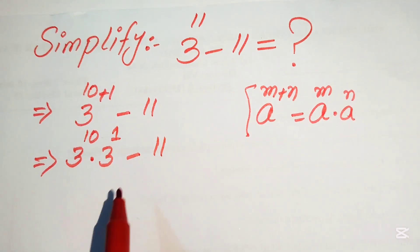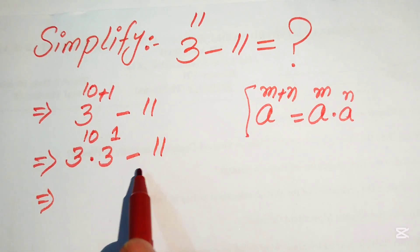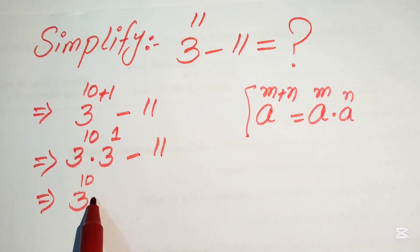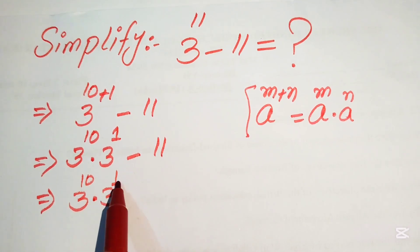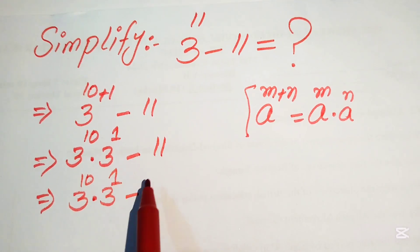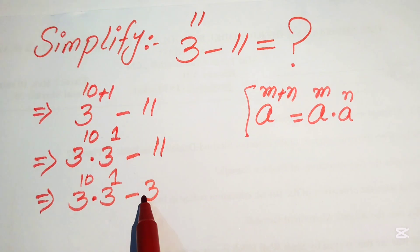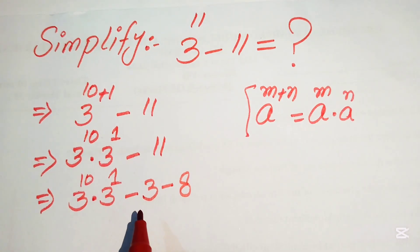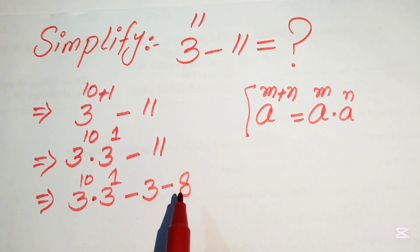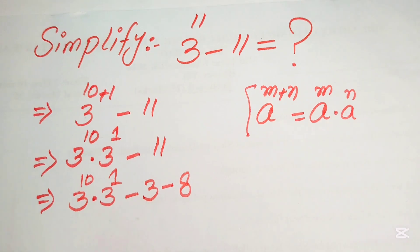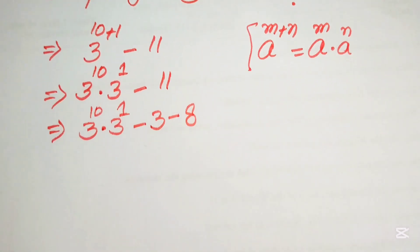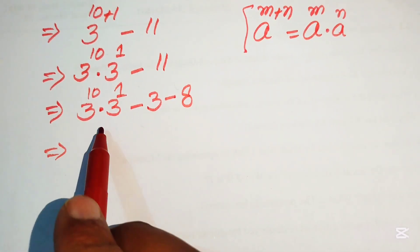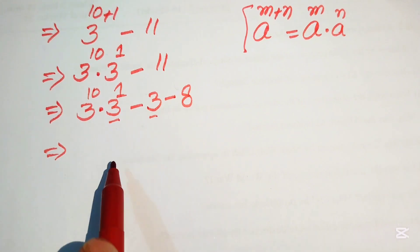Next, we focus on the minus 11 and rewrite it as minus 3 minus 8, since minus 3 minus 8 equals minus 11. Now, in both of these terms we have 3 as a common factor.